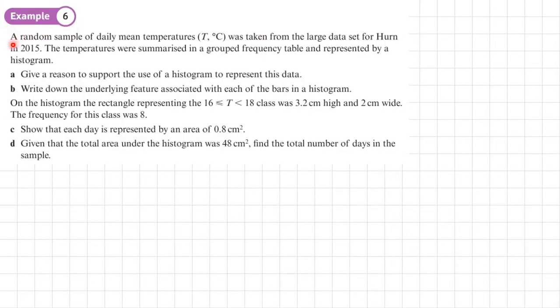Example 6. A random sample of daily mean temperatures was taken from the large data set for Hearn in 2015. The temperatures were summarized in a grouped frequency table and represented by histogram. Part A, we need to give a reason to support the use of a histogram to represent this data.